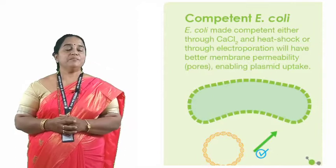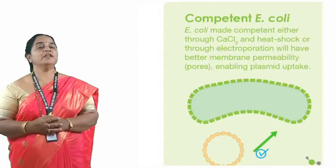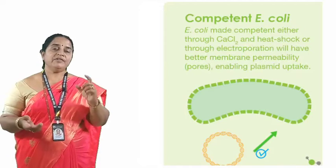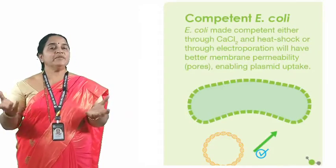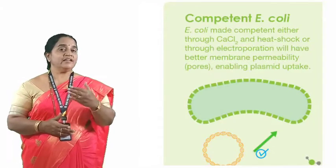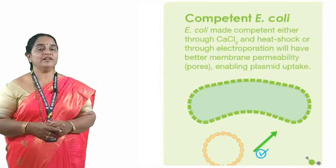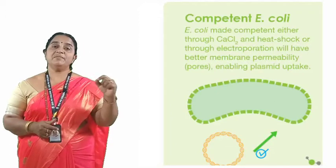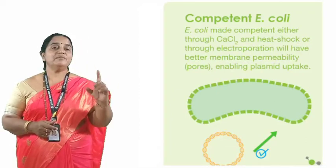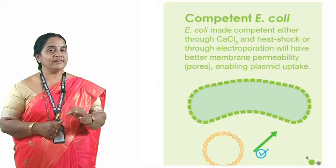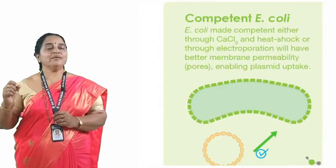Tool number three is the competent host cell. The most preferred host cell for obtaining products for human welfare is E. coli, which is easy to culture, harmless, easy to handle, can survive even in anaerobic conditions, and a simple lactose medium can be used for culturing. E. coli can easily respond to changes in the medium and undergo transformation. If you want to bring changes in plant cells, then the host cell preferred is Agrobacterium tumefaciens. The commonly used host cells in genetic engineering are E. coli and Agrobacterium tumefaciens.